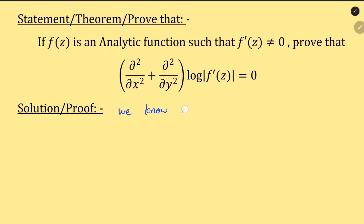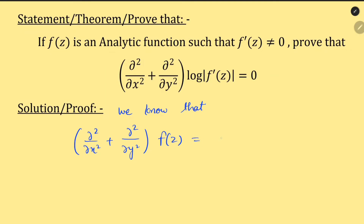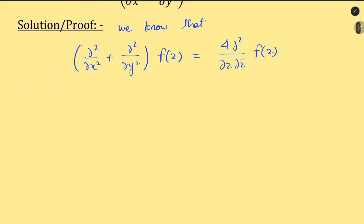We know that ∂²/∂x² + ∂²/∂y² of f(z) is equal to 4·∂²/∂z∂z̄ of f(z). यह हमको पहले से पता होना चाहिए (This we should already know).